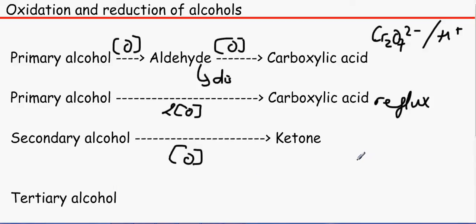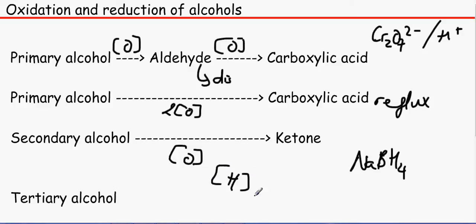With reduction, a suitable reducing agent is NaBH4. We can depict that with an H, and basically it just goes the opposite way. So ketones can be reduced to make secondary alcohols, and carboxylic acids can be reduced — first to an aldehyde and then to a primary alcohol.